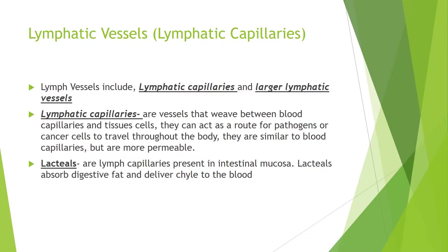Lymph vessels include lymphatic capillaries and larger lymphatic vessels. Lymphatic capillaries are vessels that weave between blood capillaries and tissue cells. They can act as a route for pathogens or cancer cells to travel throughout the body. They are similar to blood capillaries but are more permeable.